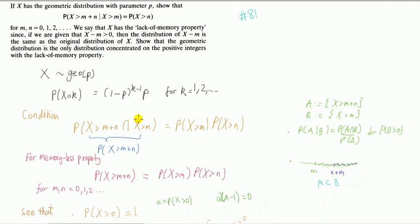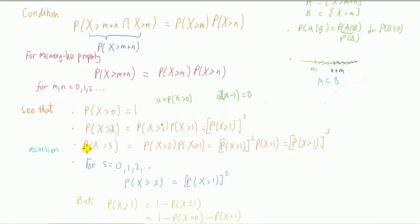All right, so that looks better now. We're closer to what we want because we've got a conditional sign. I've rewritten it here in red. Now I want to think about expressing this probability, x bigger than some number, in terms of just a function of one probability number.